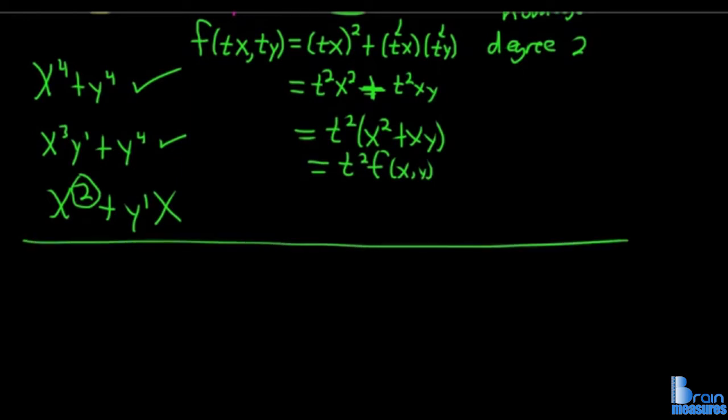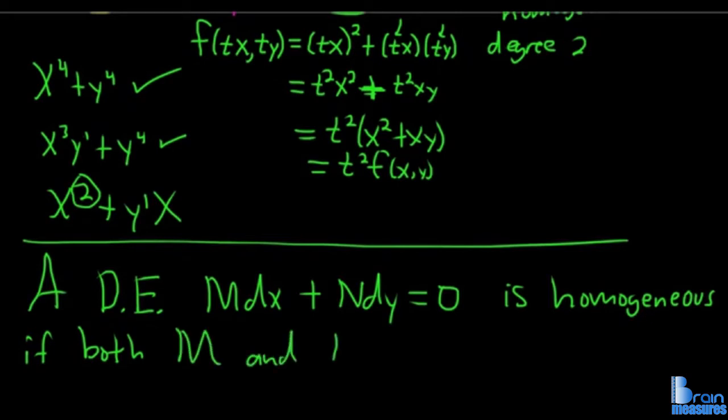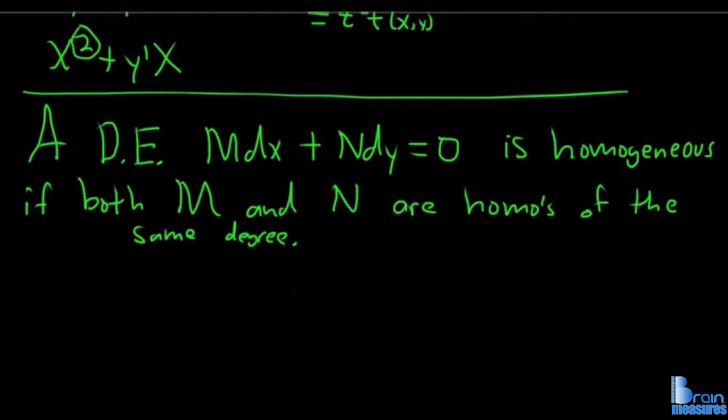A DE is homogeneous if each piece is homogeneous of the same degree. So a DE of the form Mdx + Ndy = 0 is homogeneous if both M and N are homogeneous of the same degree.